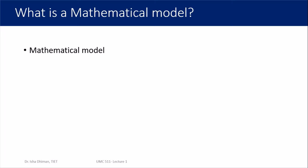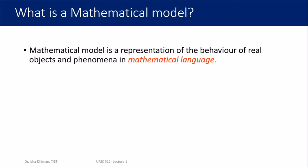Now we move specifically to our actual model under discussion: the mathematical model. So far we have learned that whatever type of model you want to understand, it needs a certain language. The schematic model needed the language of drawing and visualization. Similarly, a mathematical model is a representation of the behavior of real objects and phenomena in mathematical language. The important word here is 'mathematical language'.